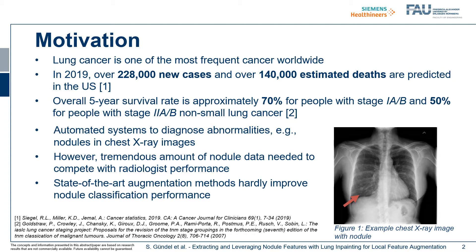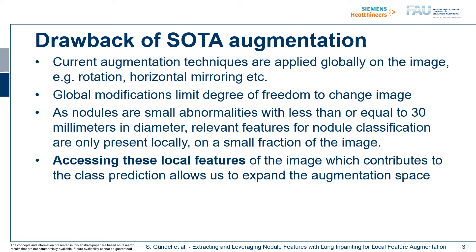There are several drawbacks of the current state-of-the-art augmentation techniques. The current techniques are all applied globally on the full image — for example, you can rotate the full image by a certain degree. Those global modifications limit the degree of freedom to change the image. As we are working with nodules, which are very small abnormalities with less than or equal to 30 millimeters in diameter, the relevant features for nodule classification are only present locally on a very small fraction of the image.